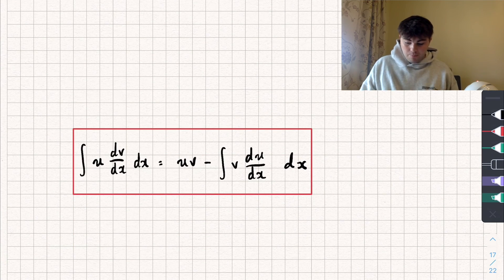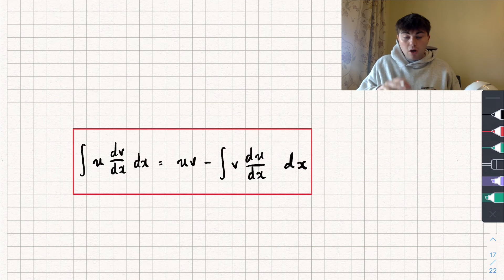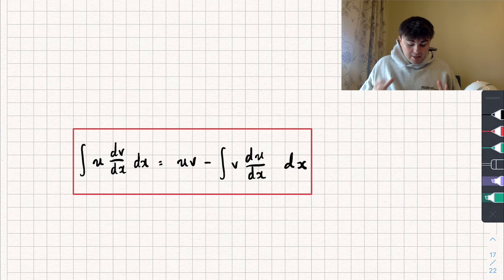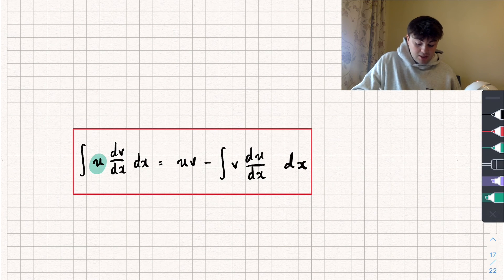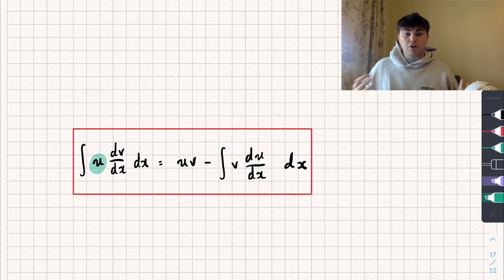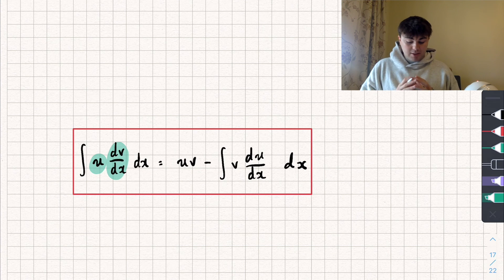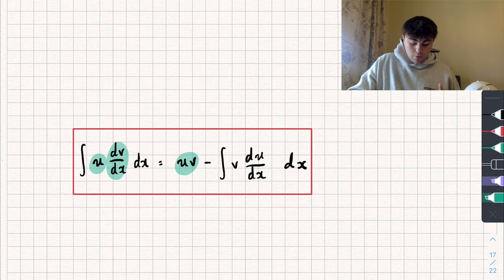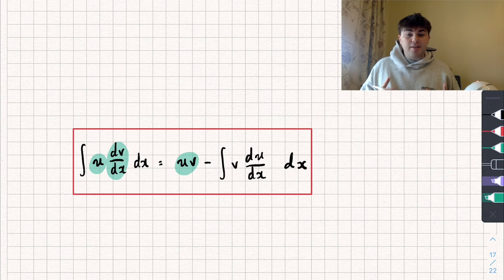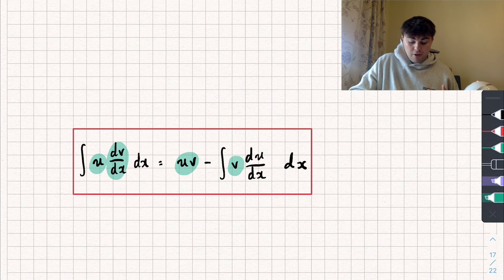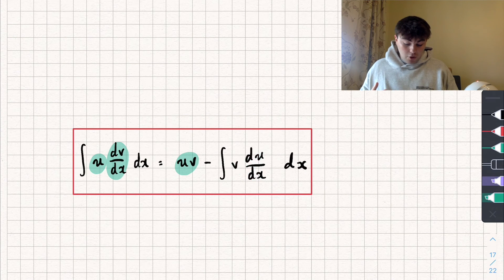It's in this red box here. It does look confusing, but like a lot of things in maths, it might look hard but it's actually pretty easy. All it says is: if we want to integrate something which is a product of functions — in this case some function u and another function which is the derivative of v, multiplied together — then that's just equal to the product of u and v, subtract the integral of v multiplied by the derivative of u.